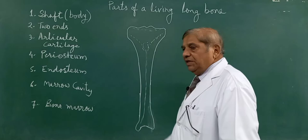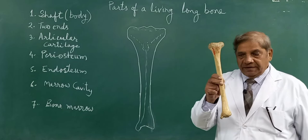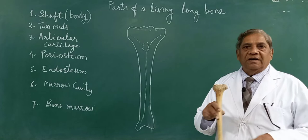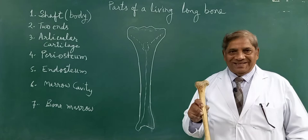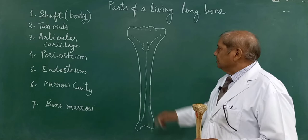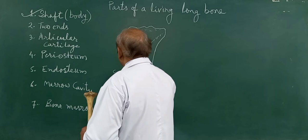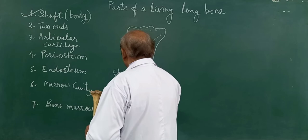If you see a living long bone — say for example, this is the tibia — this bone which is in my hand is the dry bone. But we are talking of the living long bone, which is present in our lower limb, that means in the leg, on the medial side of the leg. That bone is called as the tibia bone. Most of the part of the tibia consists of the shaft or the body. This part of the bone is called as the shaft — S-H-A-F-T — or you can call it as body.